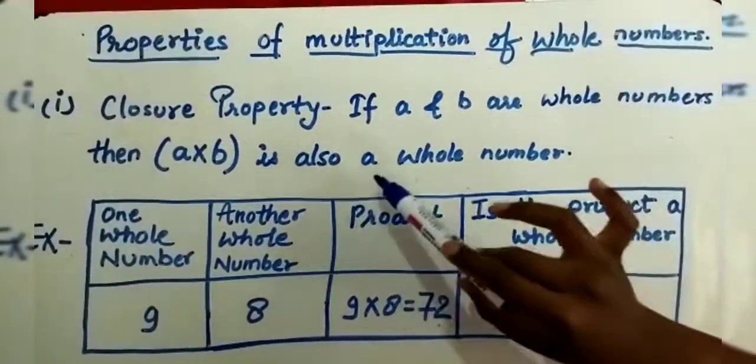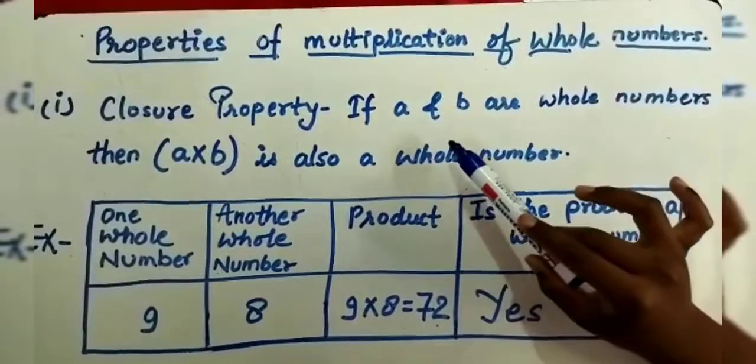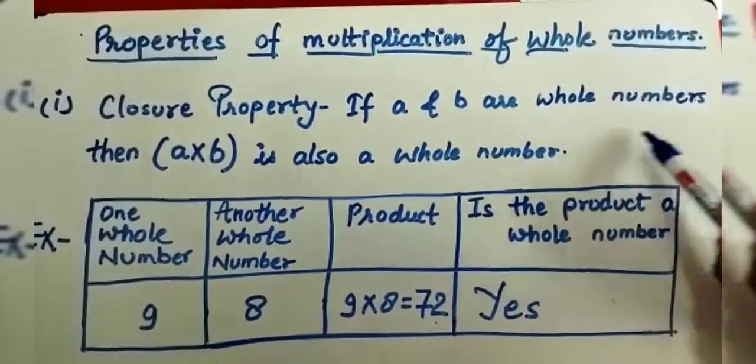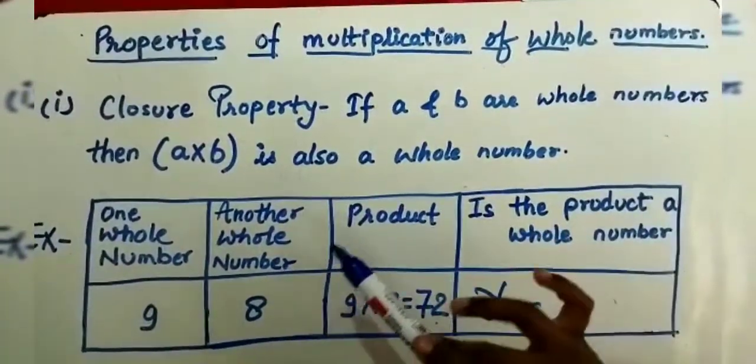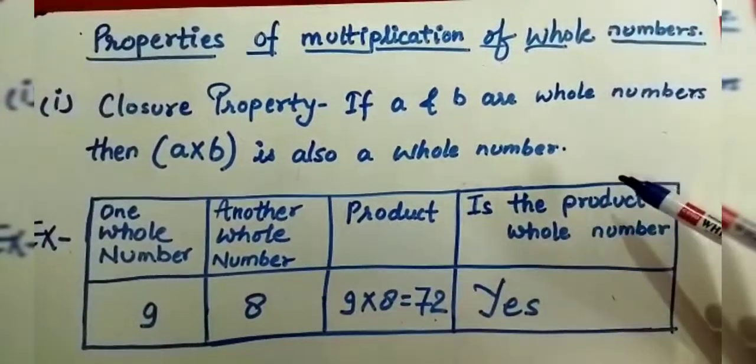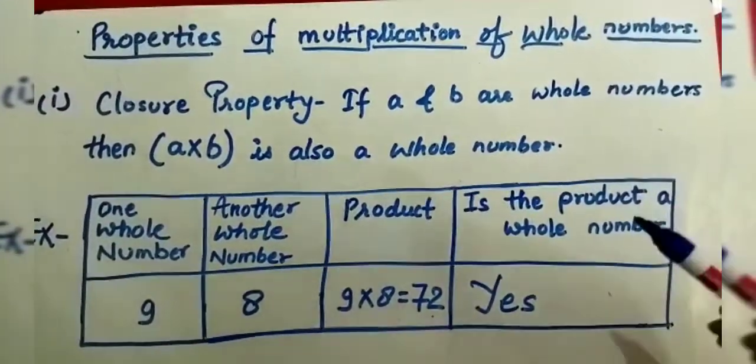The first thing is our closure property. One number is A and the other number is B. If we do A into B and its product is whole number, then we will call it closure property.